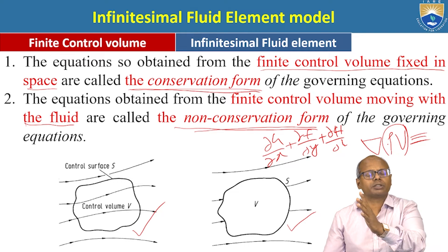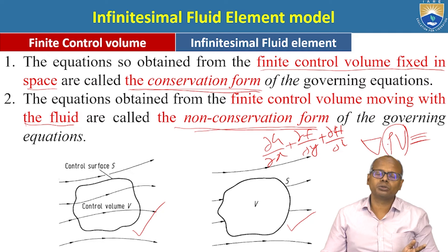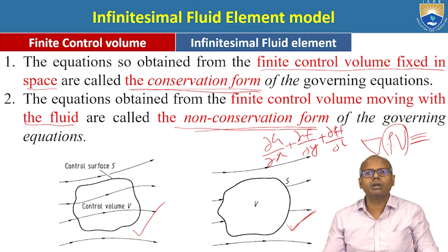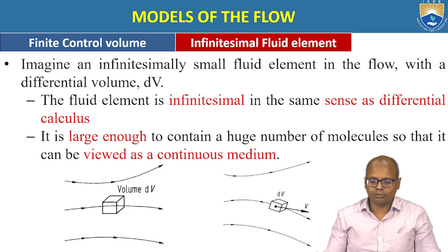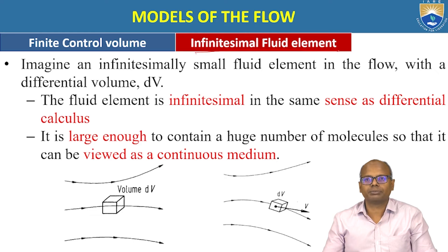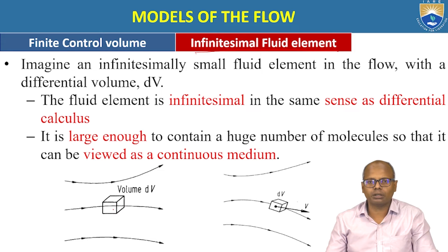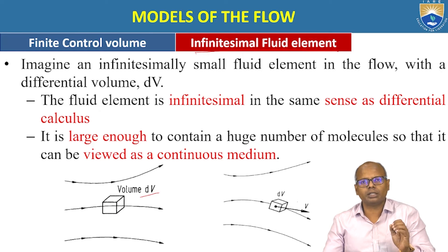These are the pros and cons of the finite control volume. The second model of fluid flow is the infinitesimally small fluid element. We assume a Cartesian or cylindrical form of volume dV. In the sense of differential calculus, it is infinitely small, but it should be large enough to carry some number of molecules so that it can be treated as a continuum or continuous medium.